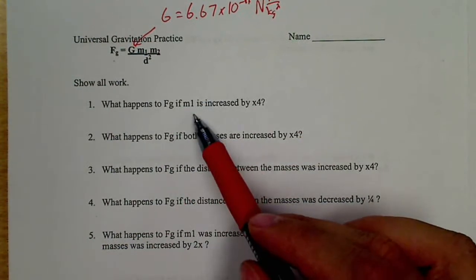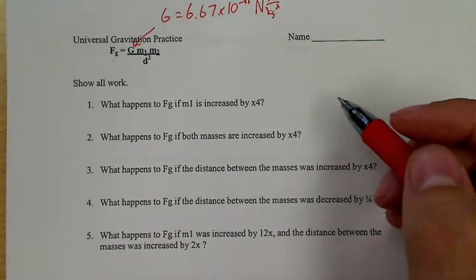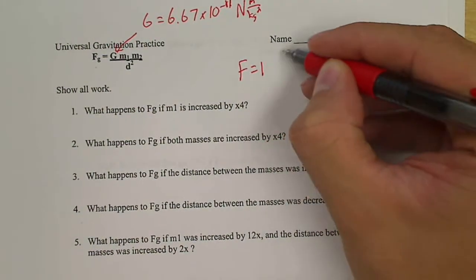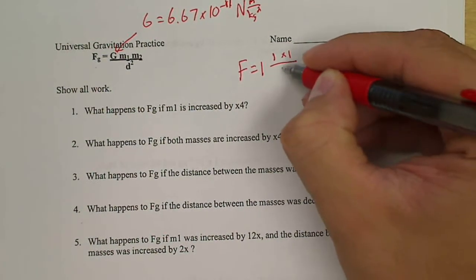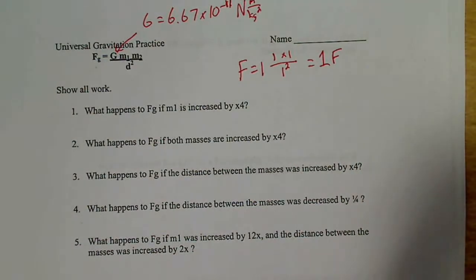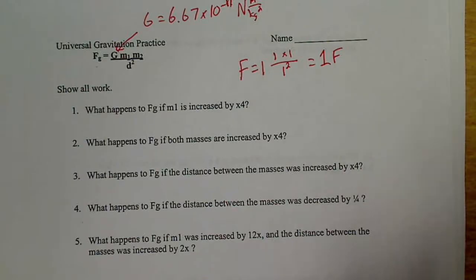So what happens to Fg if M1 is increased by four? So my standard, if everything stayed the same, G would be one, mass would be one, mass would be one, distance squared would be one. That would give me the normal standard regular force.